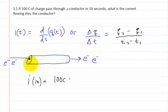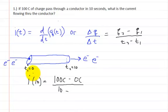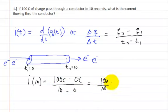Since there's nothing going through there yet, q1 is 0 coulombs. All over t2, which is 10 seconds, minus t1 at the beginning, which is 0 seconds. So that's going to be equal to 100 over 10. The zeros cancel, and you're going to be left with 10 amps.